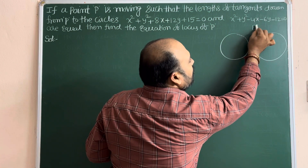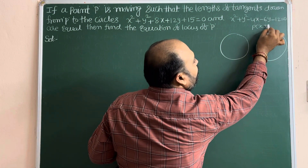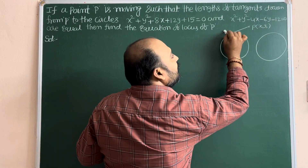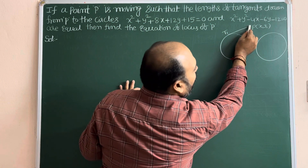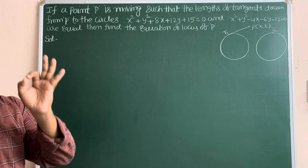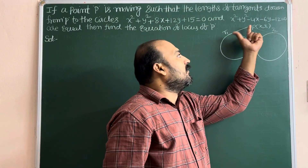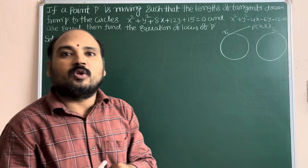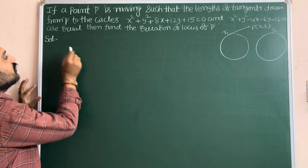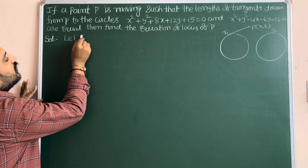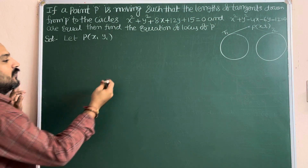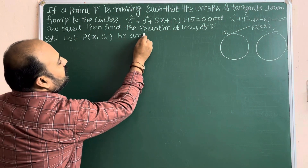The locus point is P(x₁, y₁). From this point to the first circle, the length of tangent is PT₁, and from this point to the second circle, the length is PT₂. These lengths are equal: PT₁ = PT₂. So let P(x₁, y₁) be any point on the locus.